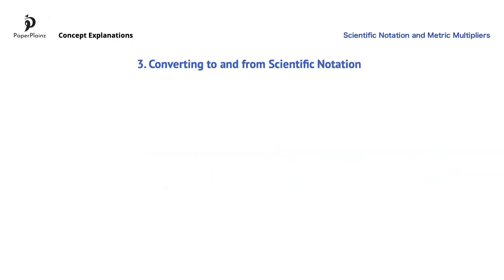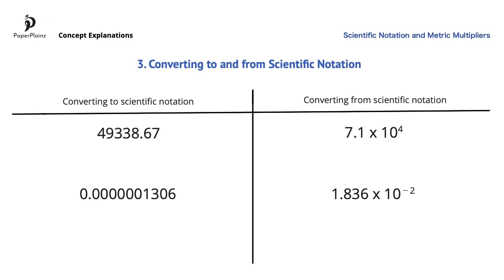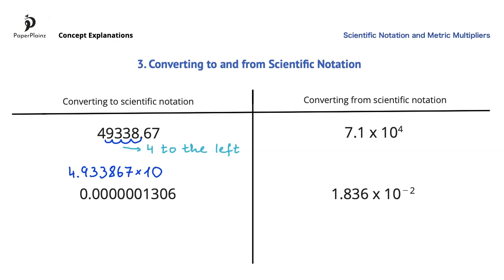Next we'll see how to work with scientific notation. We'll convert these 4 numbers. Let's start by moving the decimal point to get a number between 1 and 10. This gives us 4.933867. In scientific notation, we have to multiply this by 10 to a certain power. To find the power, we have to see by how many places we move the decimal point and in which direction. Here we move the decimal point by 4 places to the left, so the power of 10 will be positive 4.